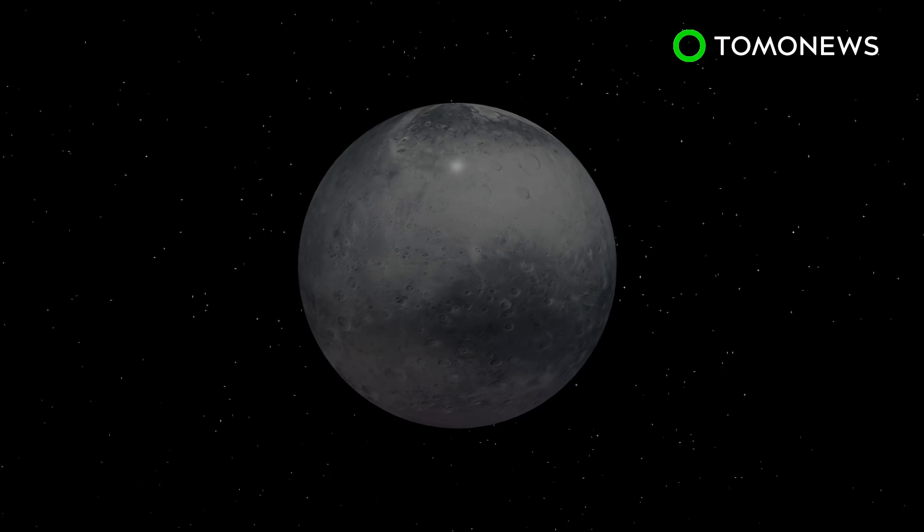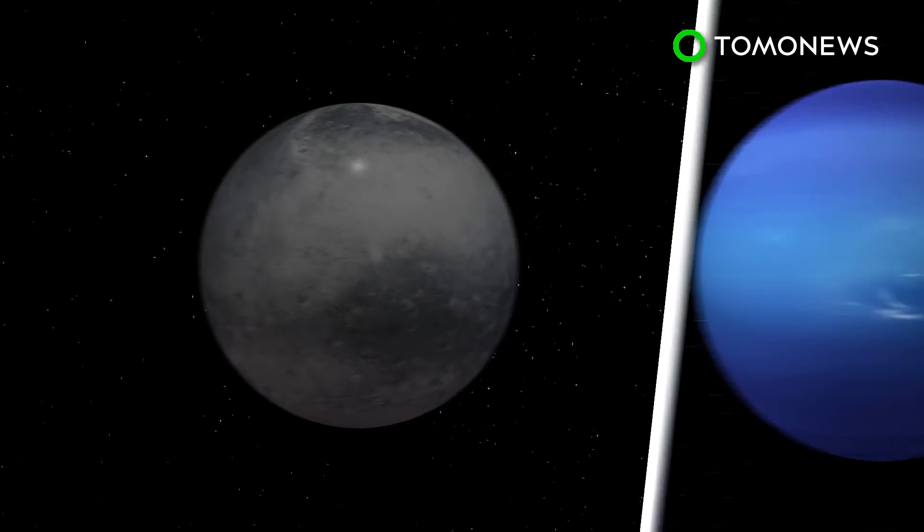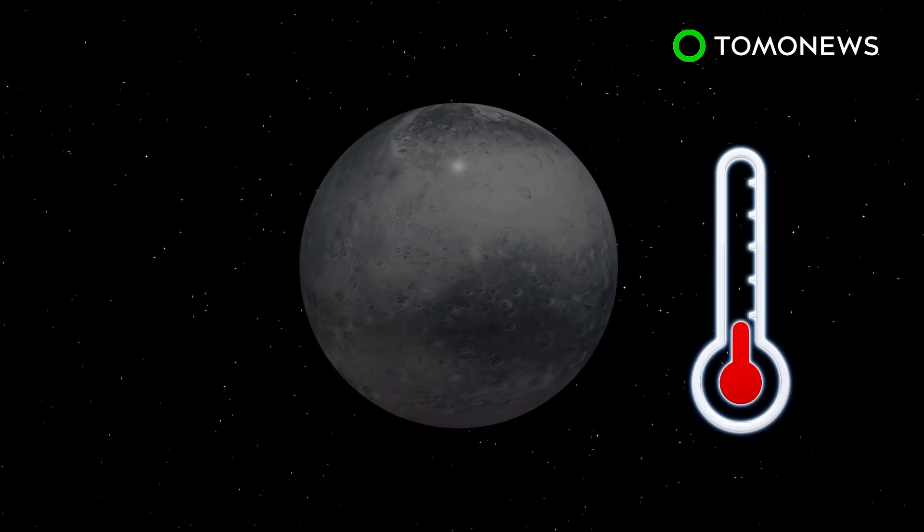The exoplanet, nicknamed the Forbidden Planet, is three times the size of Earth and has a radius that is only 20 percent smaller than Neptune. The exoplanet has temperatures of up to 1,000 degrees Celsius.